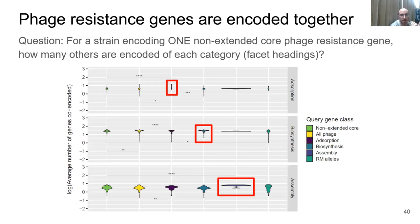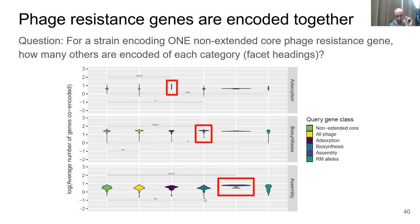I then looked at co-encoding, expecting that phage resistance genes tend to be encoded together and that those with similar functions tend to be encoded together. The question is: for a strain encoding one non-extended core phage resistance gene, how many others of each category are encoded? What you can see is that in all cases, adsorption genes associate most strongly with other adsorption genes — most strains with an adsorption gene tend to have more other adsorption genes than any other category. The same is true for biosynthesis genes with other biosynthesis, and assembly with assembly.